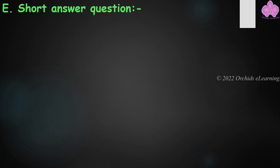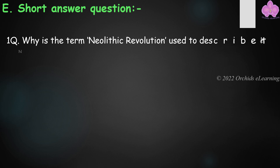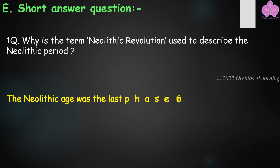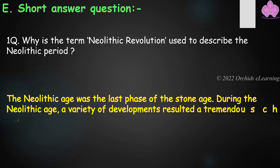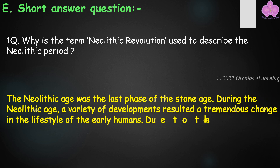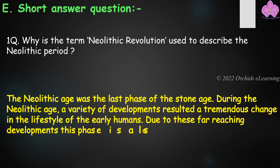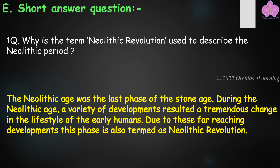Short answer question: Why is the term 'Neolithic Revolution' used to describe the Neolithic period? The Neolithic Age was the last phase of the Stone Age. During this age, a variety of developments resulted in a tremendous change in the lifestyle of early humans. Due to these far-reaching developments, this phase is also termed the Neolithic Revolution.